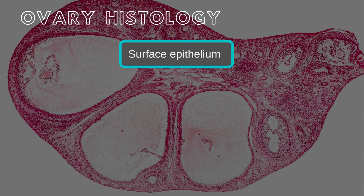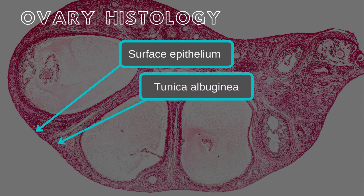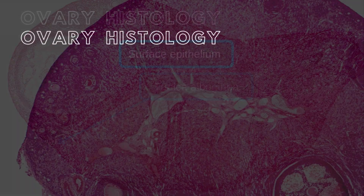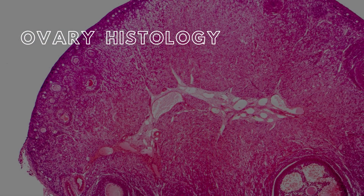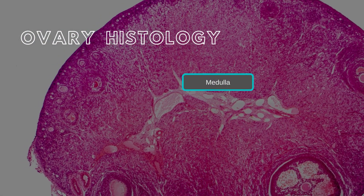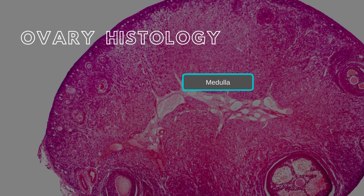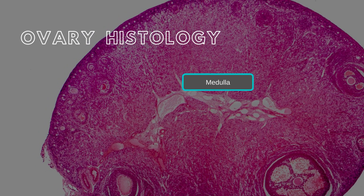The ovary's outer layer, termed the surface epithelium or germinal epithelium, is encompassed by the peritoneum. The underlying tunica albuginea is a thin, fibrous capsule. The ovary's cross-section displays an inner medulla and an outer cortex. The medulla houses connective tissue, lymphatics, blood vessels, and nerves, while the cortex contains compact connective tissue with ovarian follicles at different stages.